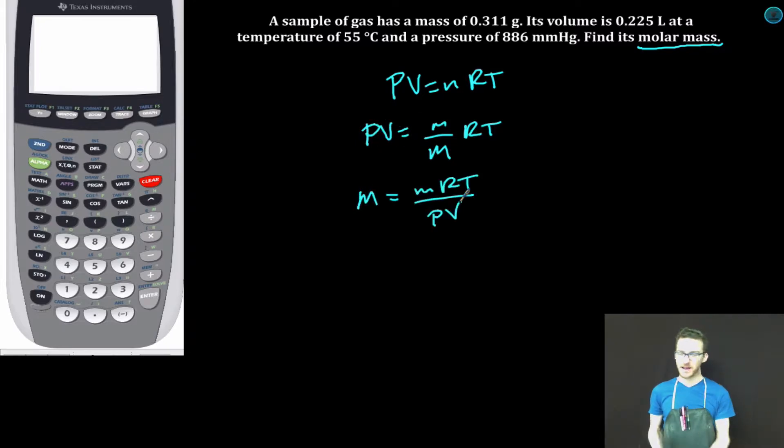Now, just a matter of plugging in the values and chugging away. The mass of our gas is 0.311 grams. Our gas constant, I'm gonna use the one based on my pressure units here, 62.36 liters times millimeters mercury per mole Kelvin.